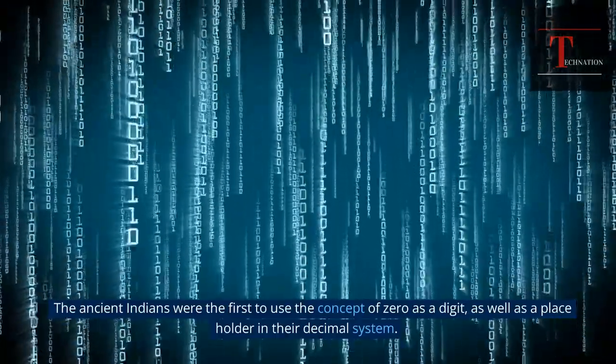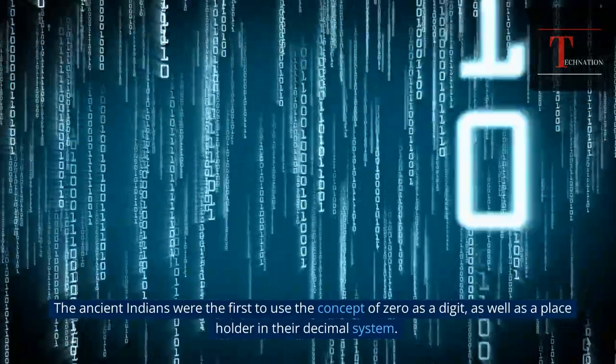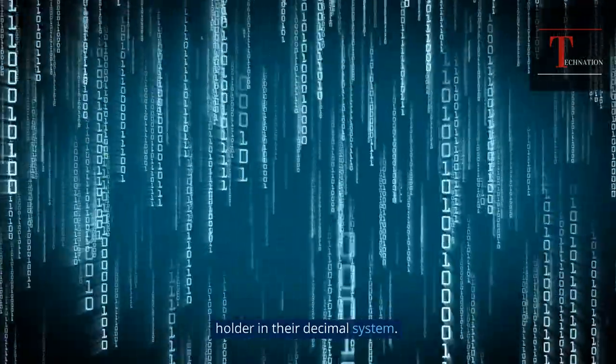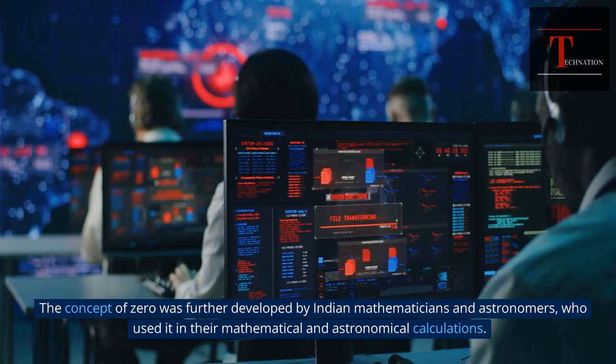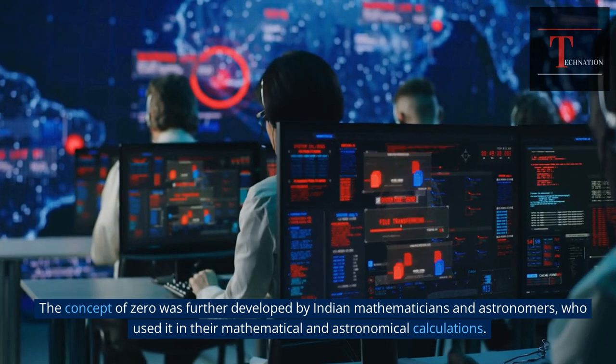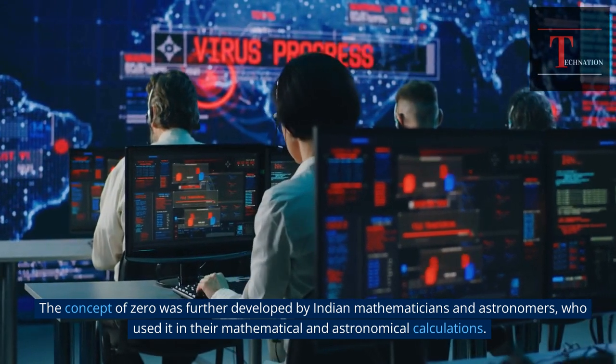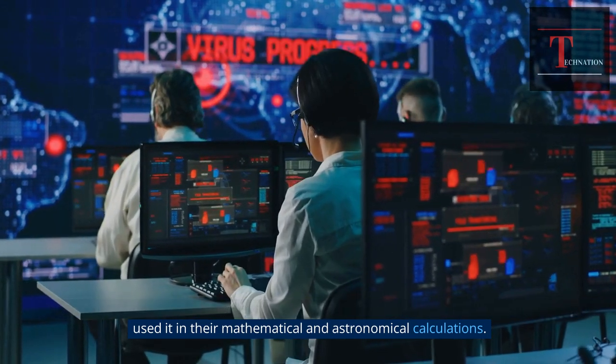The ancient Indians were the first to use the concept of zero as a digit, as well as a placeholder in their decimal system. They named it Shunya, which means empty. The concept of zero was further developed by Indian mathematicians and astronomers, who used it in their mathematical and astronomical calculations.